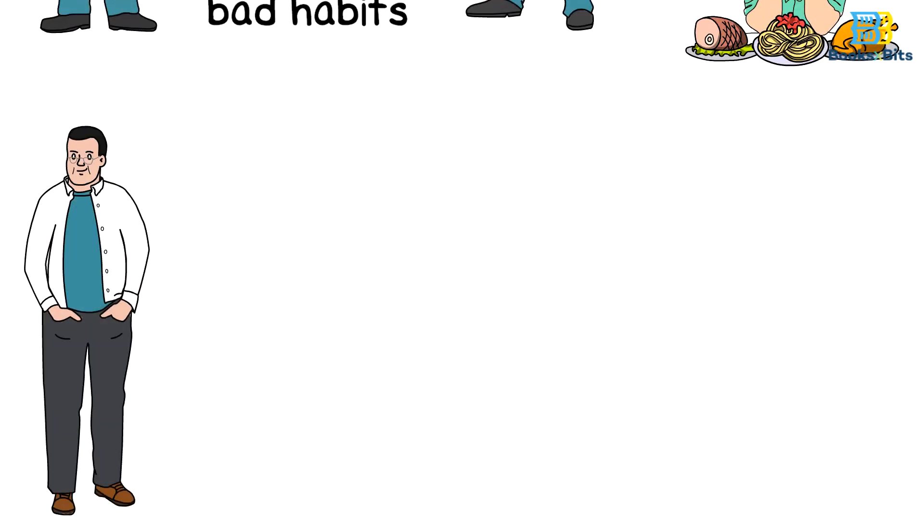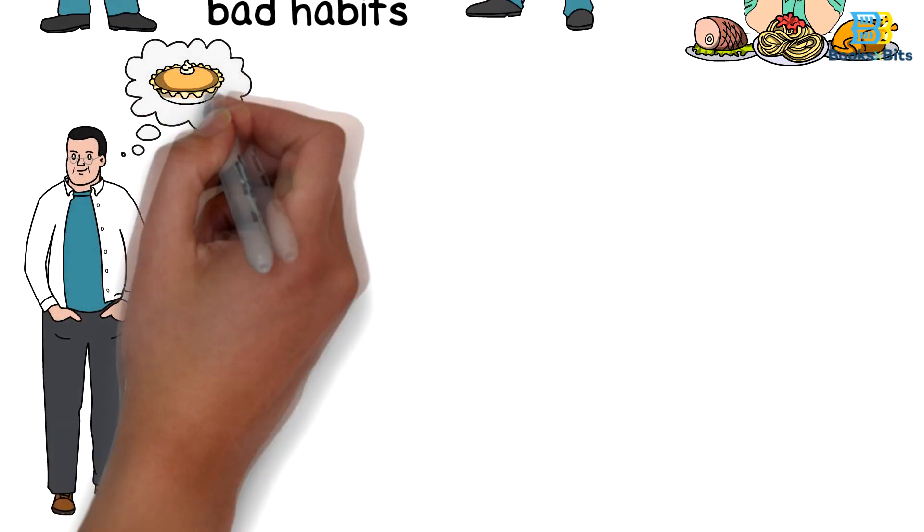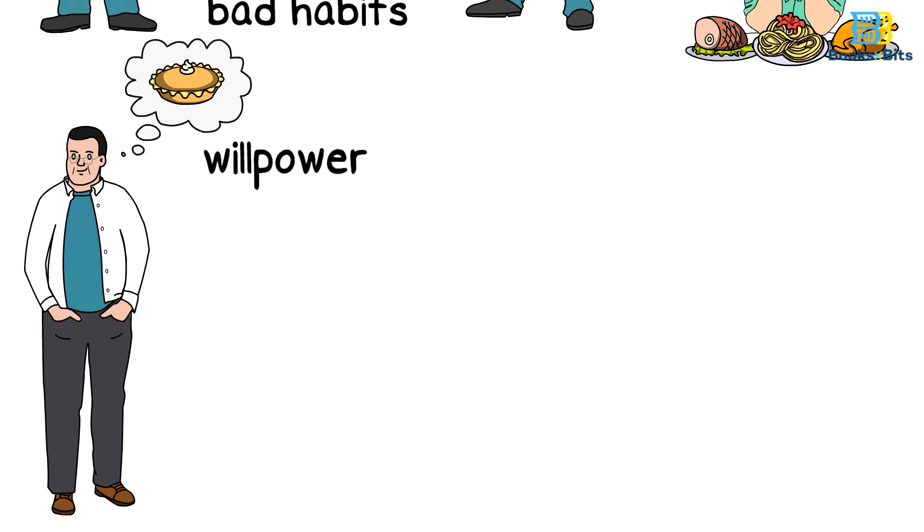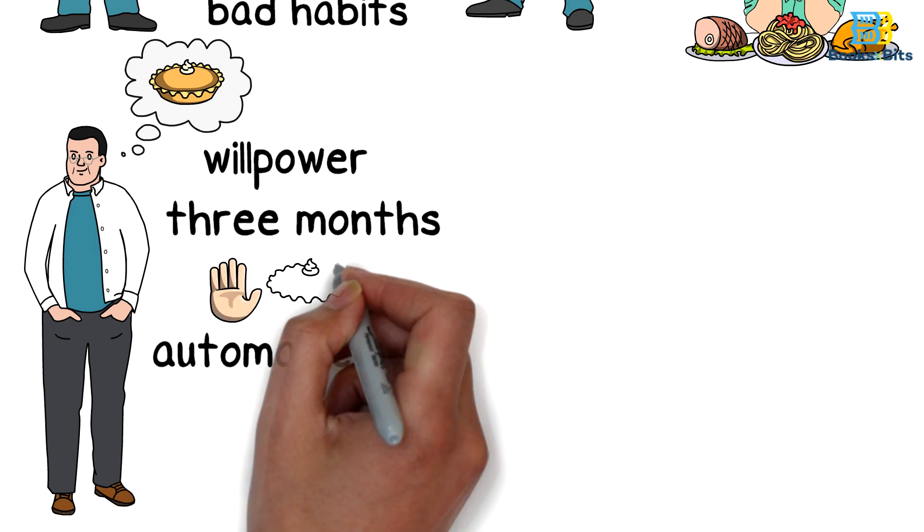An obese person can't control his desire to eat an unhealthy sandwich, because willpower doesn't occur suddenly. You need at least three months of food refusal attempts to be able to automatically refuse unhealthy food.